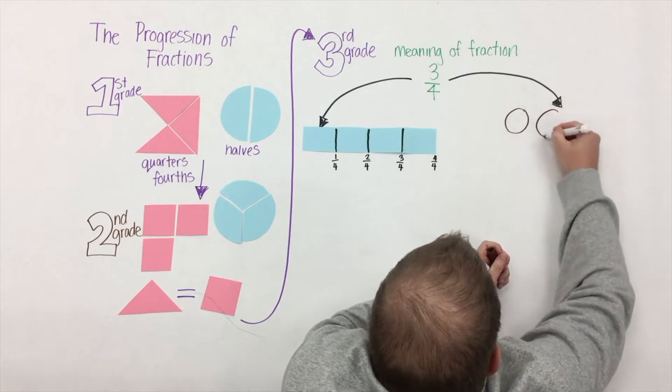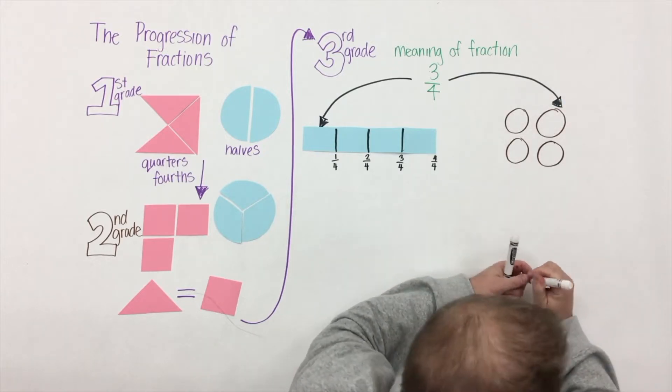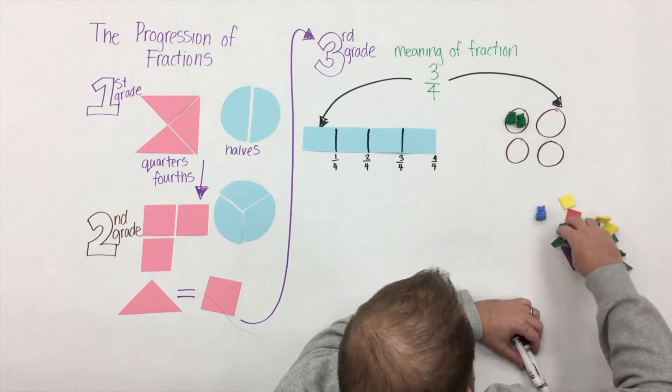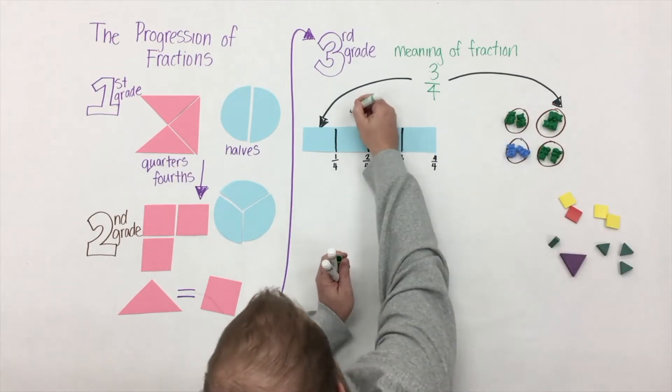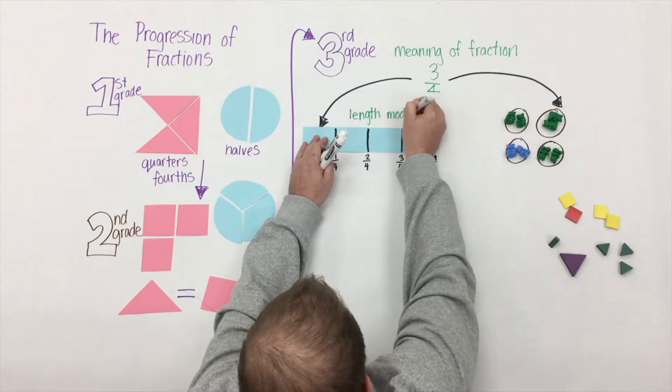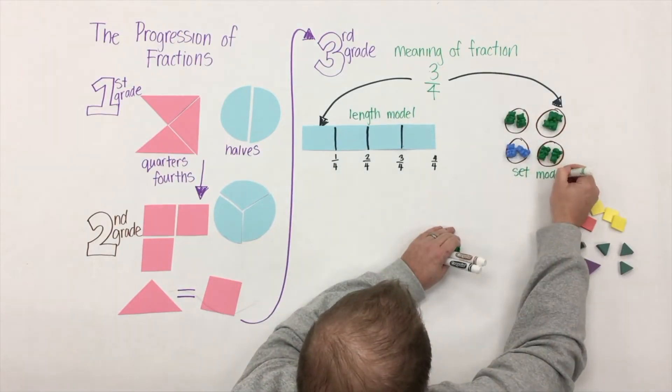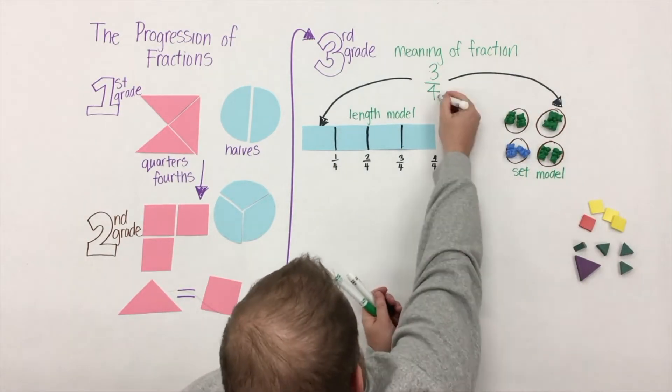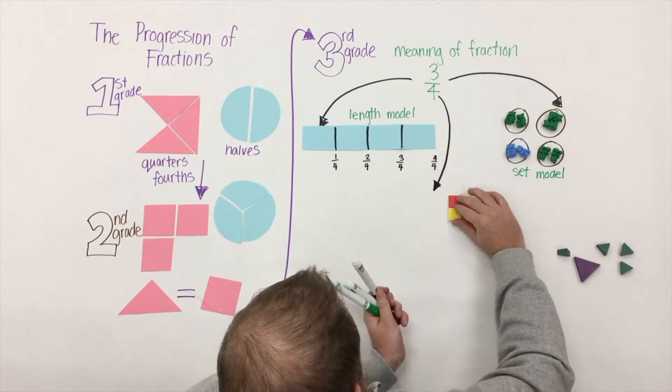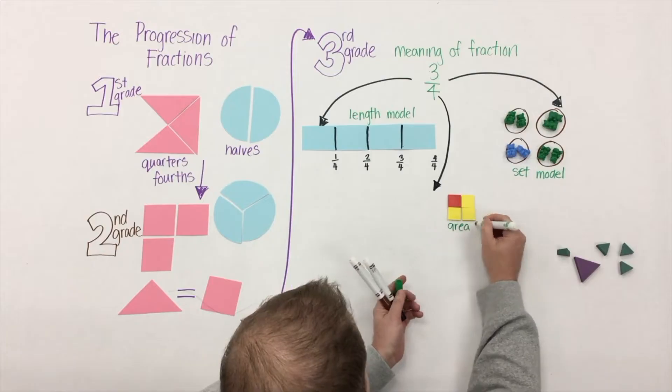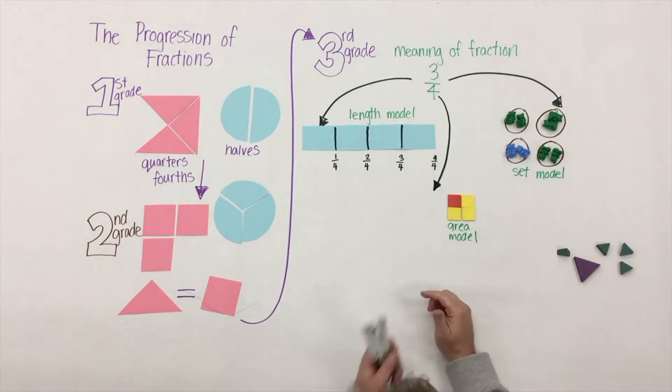How can we do that? Well, one way is by creating a length model. Here you see we've taken a strip of paper and folded it up into four parts. Another way, which isn't really explored in third grade, is the use of a set model. Here in this set model you can see that three-fourths of the bears are green. And the last way we can represent fractions is one I think we're all pretty much familiar with, and that's the area model. Here three-fourths of our square is yellow.